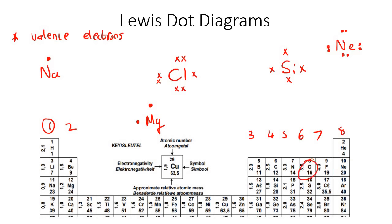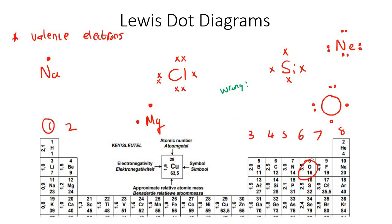Now let's do oxygen. Oxygen is in group six, so that's going to be one, two, three, four, five, six. For oxygen you would not put all six on one side — that's wrong. What you're supposed to do is put one in each of the four places first, and then go around again like that. That's important.